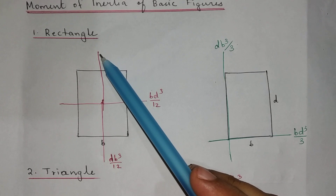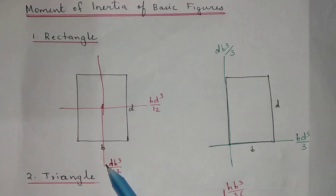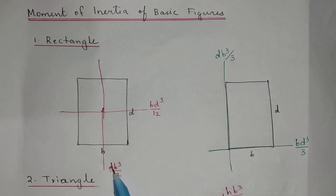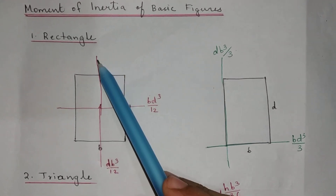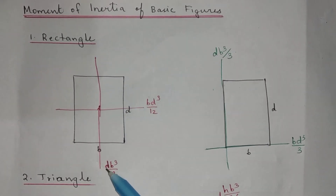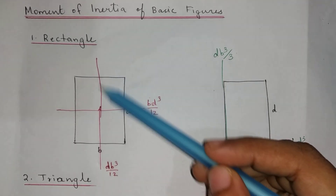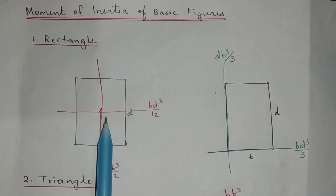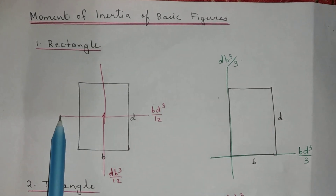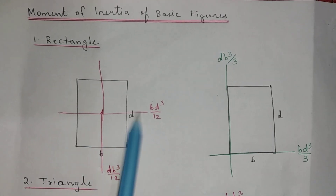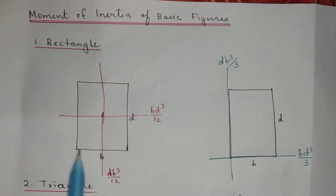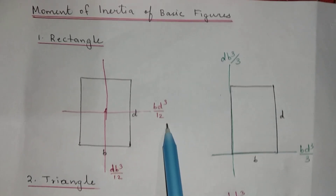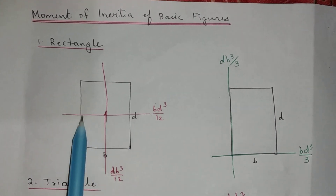We already know that if you are considering an axis, the first term should be the side parallel to that axis. So here if you are considering the X axis, the first term should be the side parallel to it, which is D. Similarly, the side parallel to the Y axis is B, so it is BD cube by 12. That is the case for a rectangle.